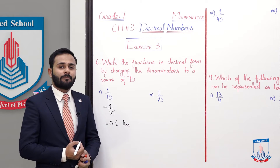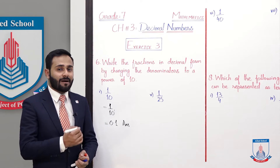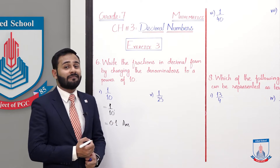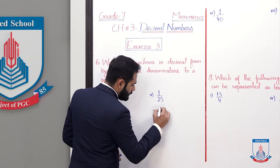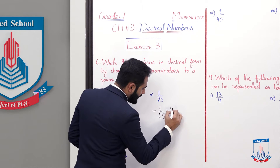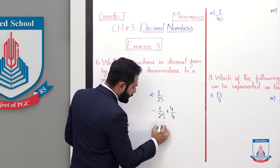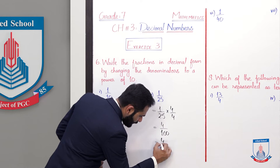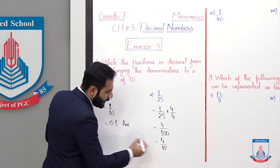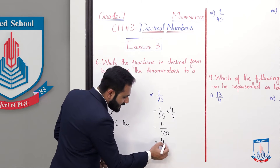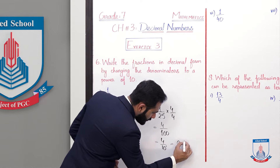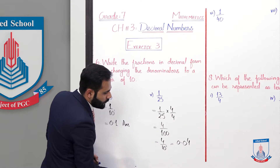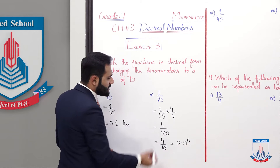Similarly, part number 5: 1 by 25. Yahaan bhi humne denominator ko pehle 10 ki power mein convert karna hai. We multiply and divide by 4: so 1 divided by 25, multiply by 4 and divided by 4, gives 4 over 100. 100 is actually 10 raised to the power 2, so point 2 digits peeche aayega - it becomes 0.04. This is the decimal form of this fraction.